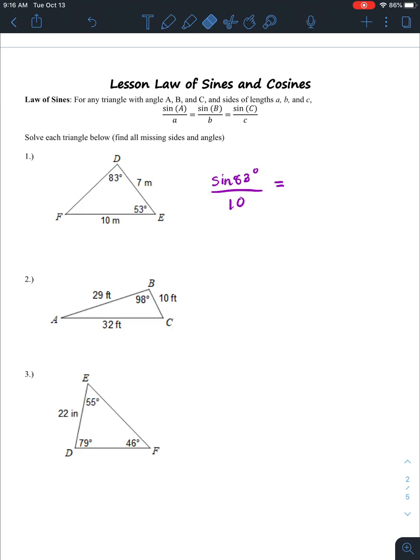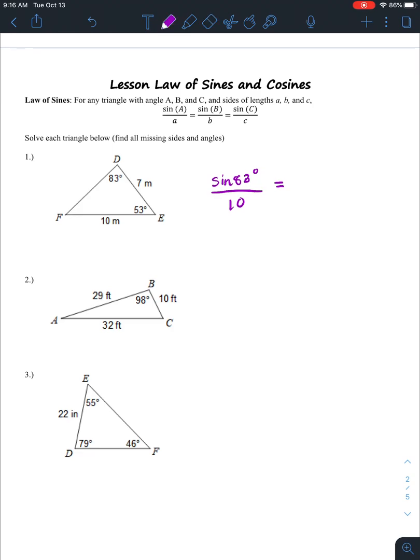So here, when I'm looking at this problem, I ask myself, what do I want to solve? Well, I can find F because I know that angle F, I don't need the law of sines. I know how to find F. That's just 180 degrees minus 83 plus 53. And that's going to give me 34 degrees.